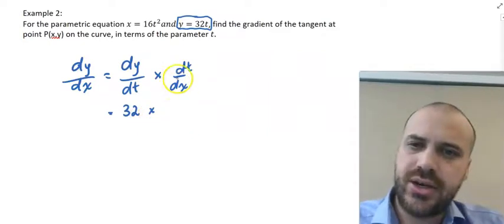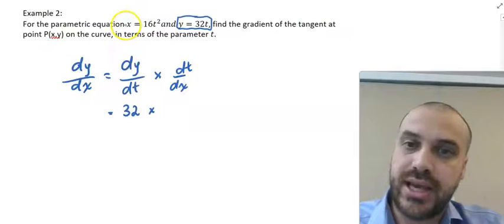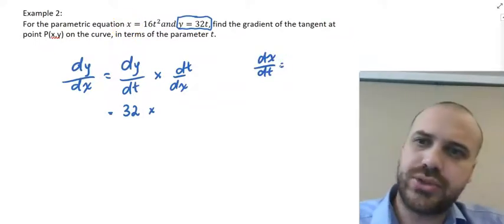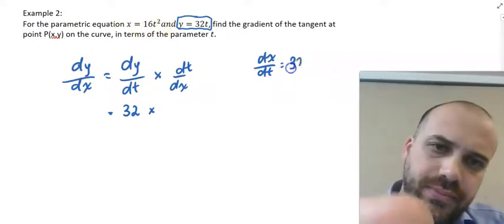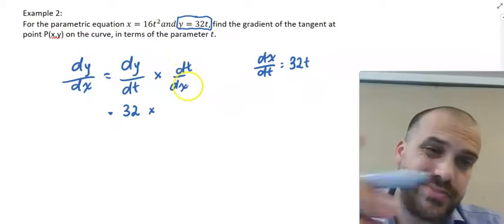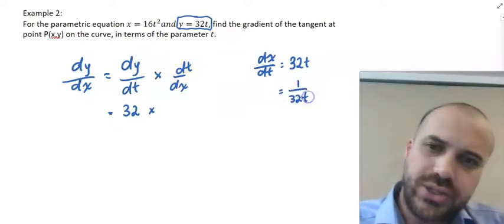Now, dt/dx, we don't know dt/dx, but we know that dx/dt will be equal to the derivative of that, which is 32t. Which, of course, means that dt/dx is the reciprocal of that, 1 on 32t.